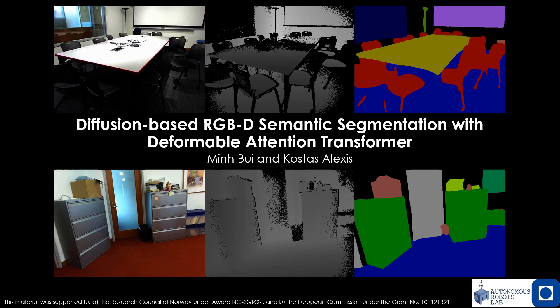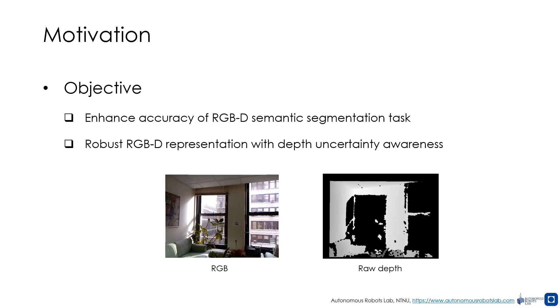We present our work on diffusion-based RGBD semantic segmentation with deformable attention transformer. The work focuses on the RGBD semantic segmentation task, which assigns labels to pixels using RGB and depth data. Existing methods struggle with invalid pixels in raw depth images and rely on interpolation, which distorts real-world depth. We aim for a robust RGBD representation that handles depth uncertainty by proposing two solutions.